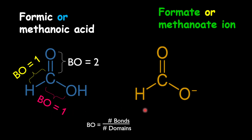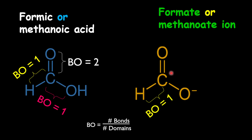Now, going over the formate ion, you're going to realize we have three bonds, but there are two types of bonds: a C-H bond and two C-O bonds. The C-H bond is the same as before — just a single bond, so it has a bond order of one. For the C-O bonds, there could be resonance because the double bond could be between either oxygen and the carbon. We're not sure whether it must be at the bottom oxygen or the top oxygen — it could be either. So the bond order gives us the average bond between the two oxygens across the two resonance structures.